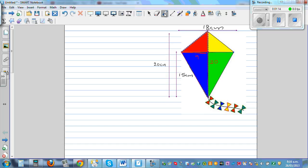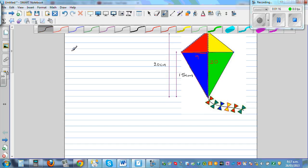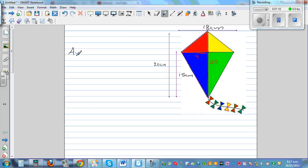Let me write area of each triangle, the red and the blue triangle. Red plus B would be half base times height, or base times height divided by 2.